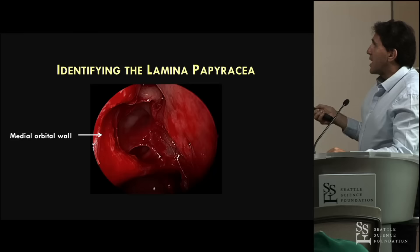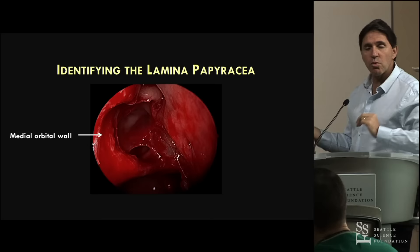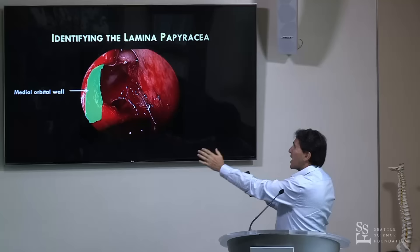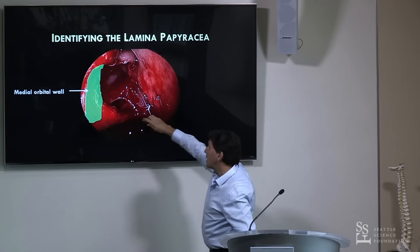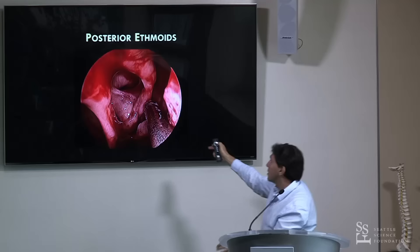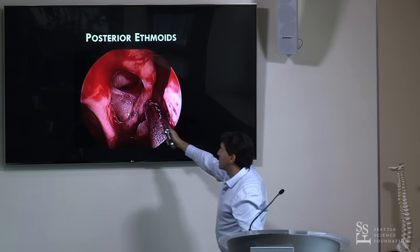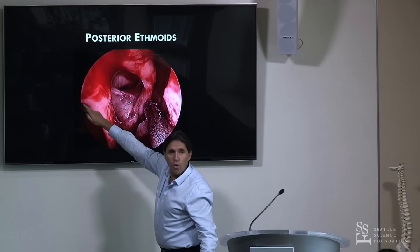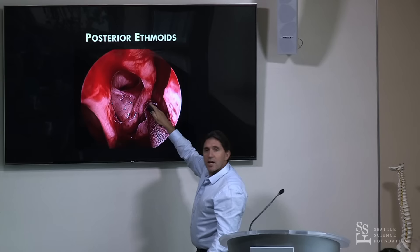Orbital floor - as soon as we've got the orbital floor, we can take off the bulla. We've got the medial orbital wall, now we've got our lateral boundary. Once we've got our lateral boundary, we know we can stay below this level, travel back, dissect everything along the middle turbinate, take out the basal lamella, and progress until we see the superior turbinate. We know the sphenoid ostium is going to be at the height of the orbital floor, medial to the superior turbinate. Even if you can't see it, you can go through there safely at that height.